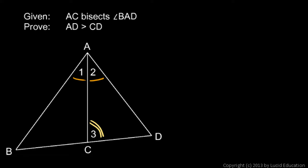So angle 3 is bigger than angle 2, that means that the side opposite angle 3, over here, must be larger than the side opposite angle 2, over there. So that means that AD must be bigger than CD, and there we have it.